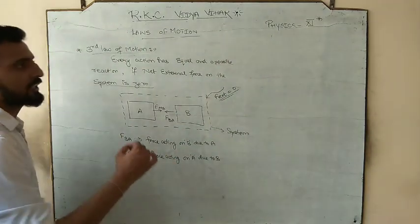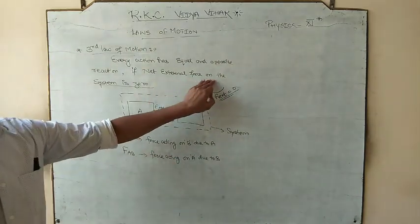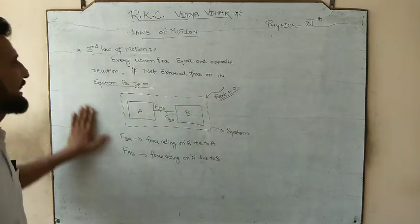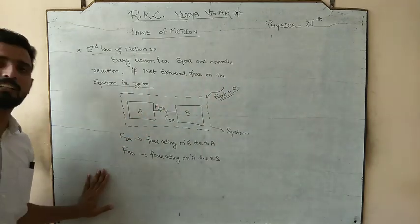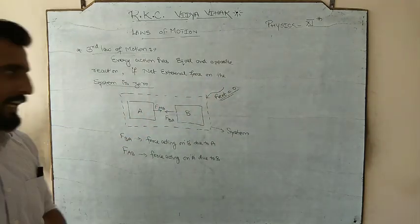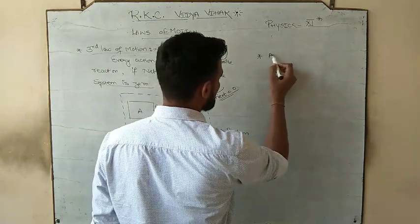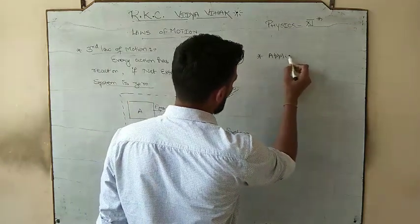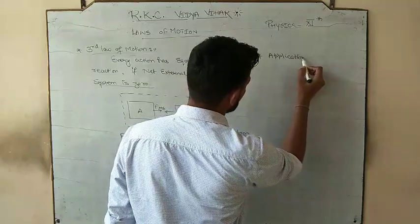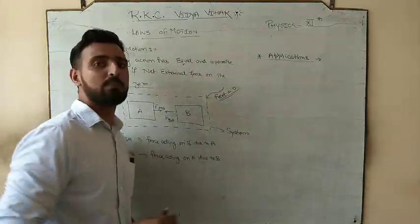So every action has an equal and opposite reaction, but only if the net external force is zero. This is Newton's third law of motion. Now let's look at applications — the fourth point is applications of the third law.